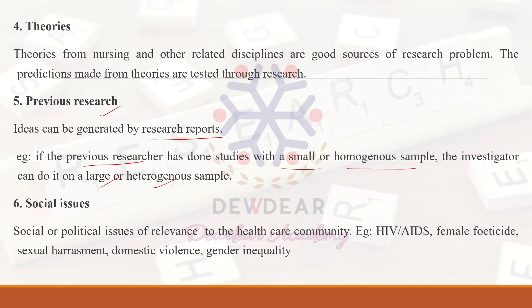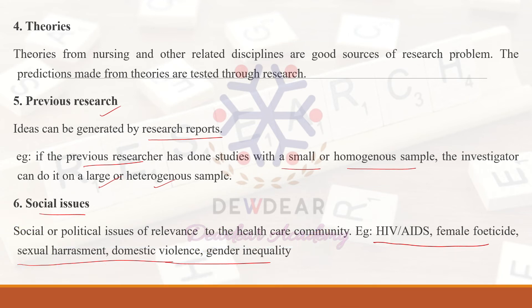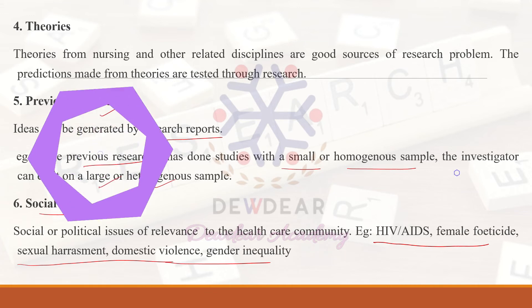The sixth source is social issues. Political and social issues such as HIV/AIDS, female feticide, sexual harassment, domestic violence, and gender inequality are examples that arouse as research problems, helping investigators go deep and make inquiries into them.